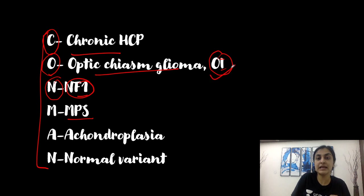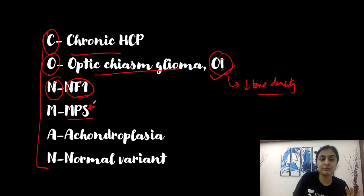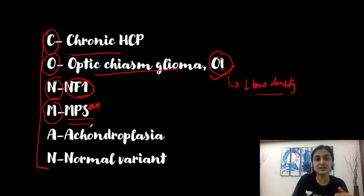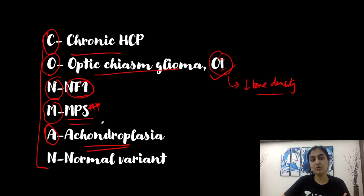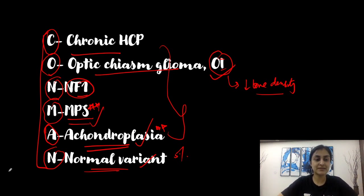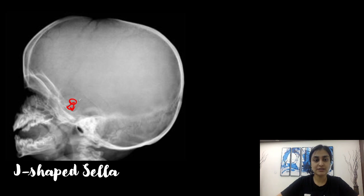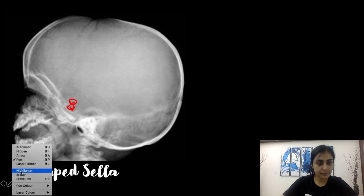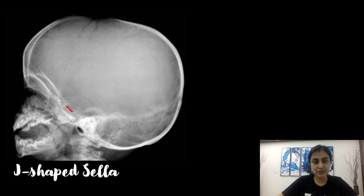Three important bony dysplasias to remember for J-shaped sella: osteogenesis imperfecta with diffusely reduced bone density, mucopolysaccharidosis (MPS) as the most frequently asked differential, and achondroplasia. In 5% of adults, J-shaped sella can be a normal variant without any pathology. This is how it will appear — with this long beak-like configuration forming the J.